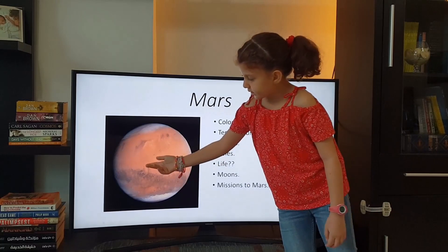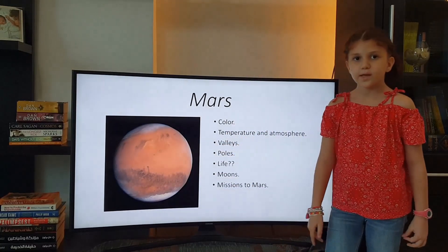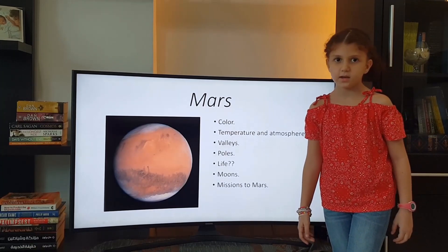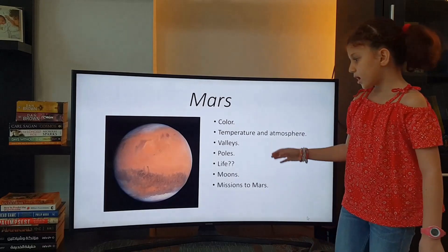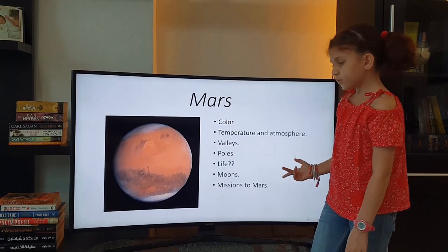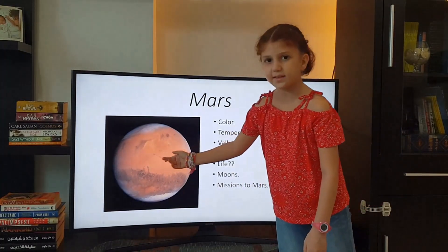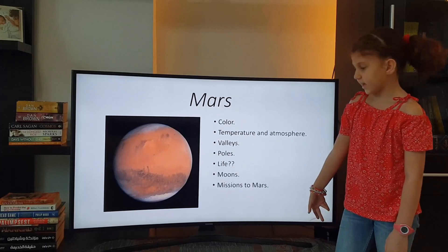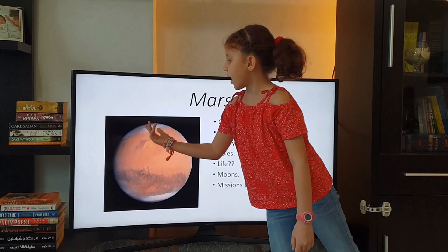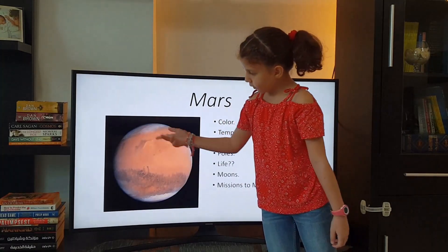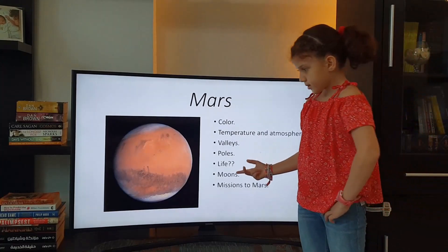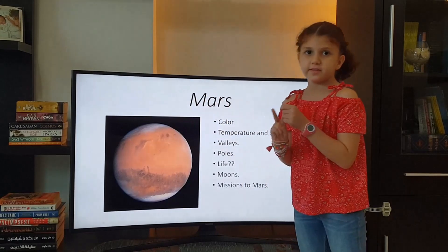Mars has valleys. The biggest one is as big as North America from coast to coast — it dwarfs the Grand Canyon. Valleys are made where liquid water used to run in the past. Mars's poles aren't red like the rest of it — they're white, because they are filled with snow. Mars has two moons: Phobos and Deimos.